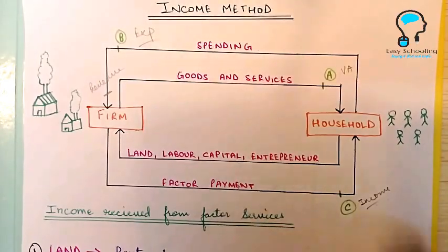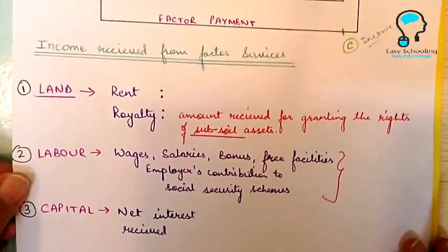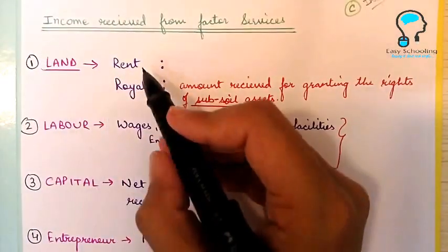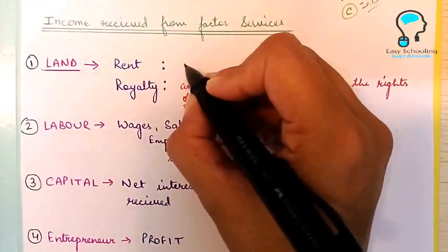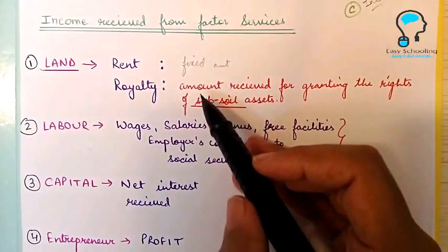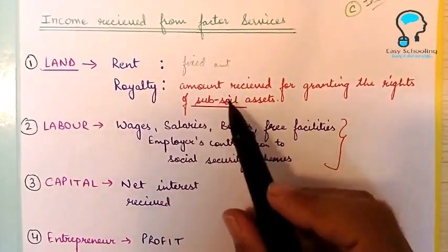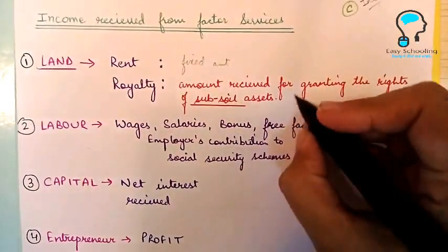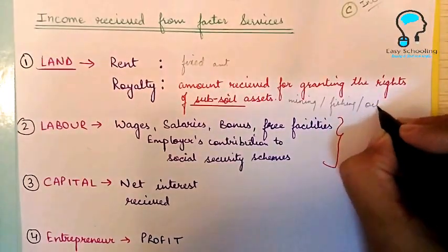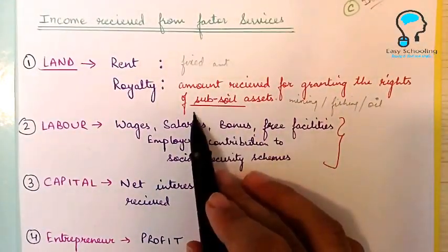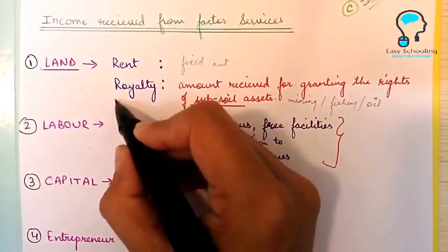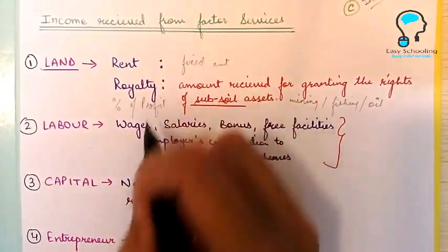The factor services offered to firms are land, labor, capital, and entrepreneurship. The remuneration received for land is rent and royalty. Rent is the fixed amount paid to the landlord by the firms. Royalty is the amount received for granting the rights of subsoil assets — for example, in the case of mining, fishing, or extraction of oil. Rent is mostly a fixed amount, but royalty is sometimes a percentage of profit.